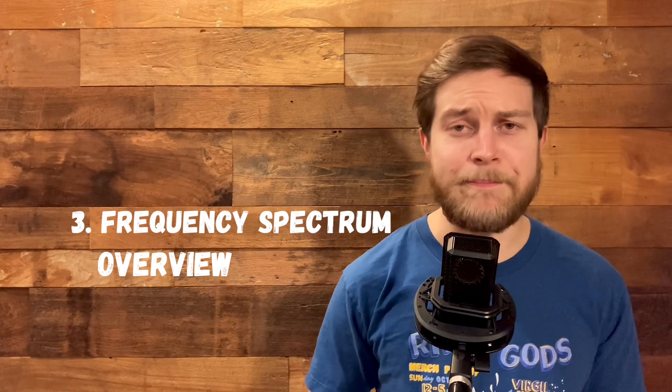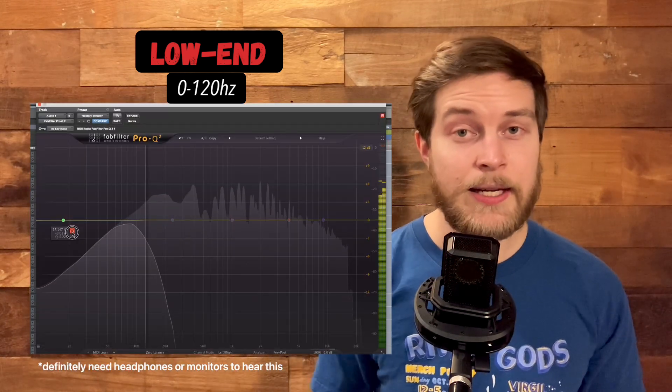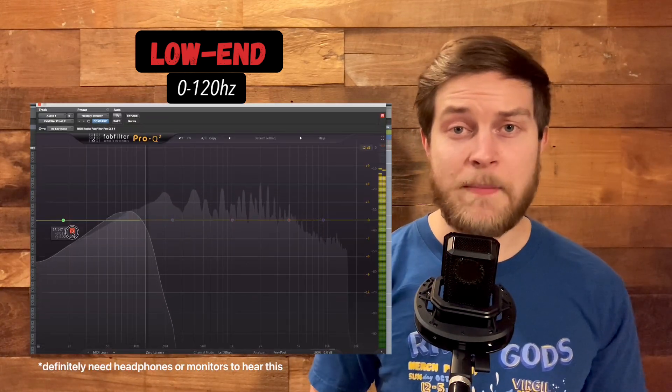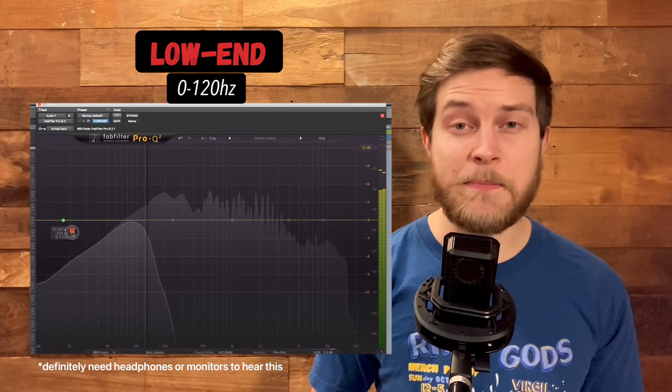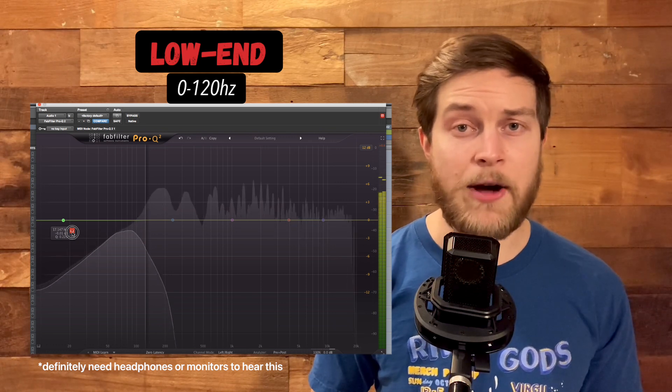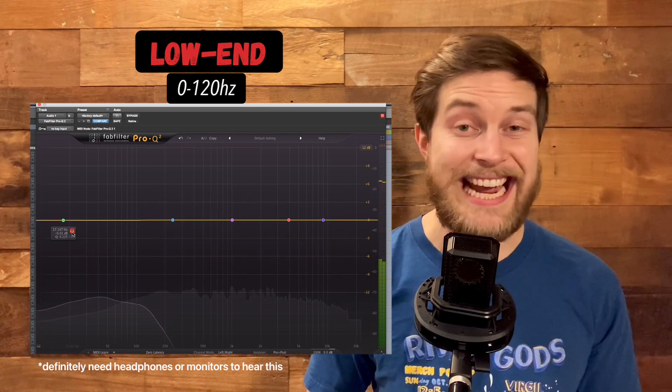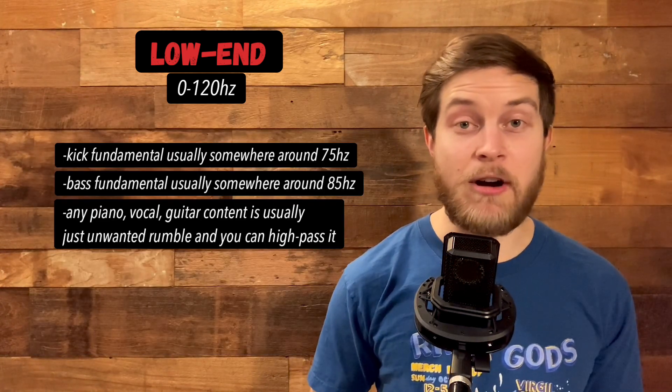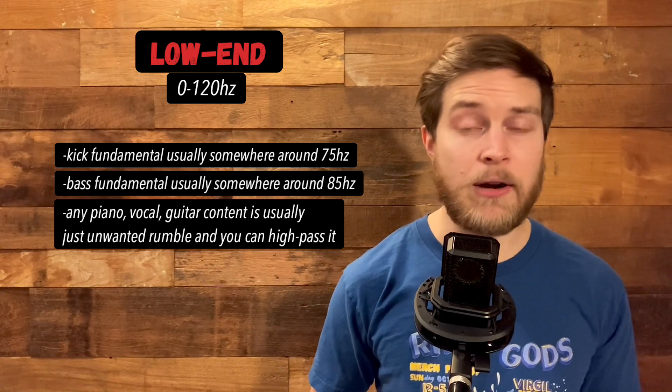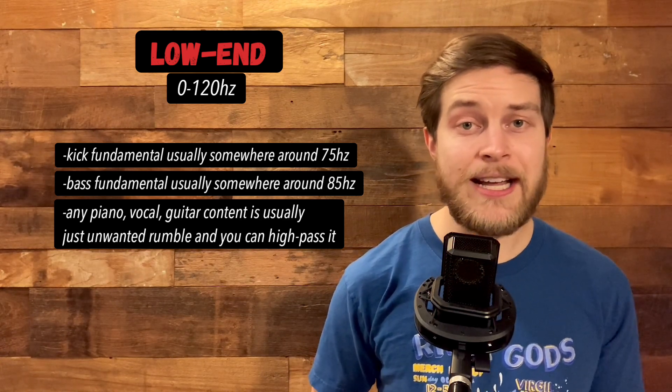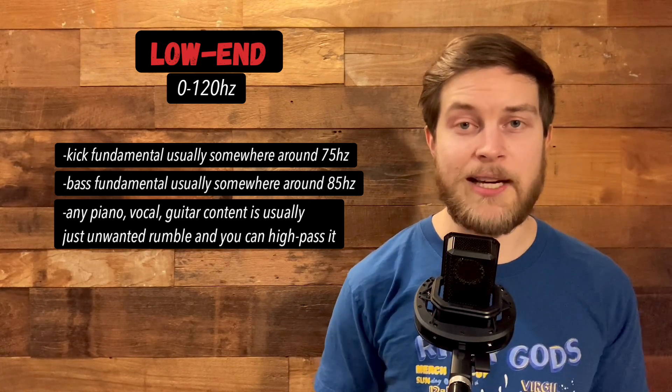We've got, going from left to right, lows to highs, the low end—the base of our song. This is primarily where the kick drum and the bass guitar live, the fundamentals being usually around 75 hertz and 85 hertz respectively. If there are any guitar, piano, vocal content down here, it's usually just unwanted rumble and you can cut that out.